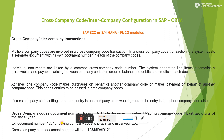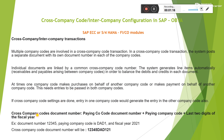Let us see how the cross-company code document number is generated by the system. The cross-company code document number always consists of: the document number of the paying company code, the company code itself, and the last two digits of the fiscal year. For example, if the document number posted in the paying company code is 12345, the paying company code is DAD1, and the fiscal year is 2021, the system will generate a cross-company code document number as 12345 + DAD1 + 21 (last two digits of 2021).